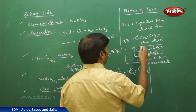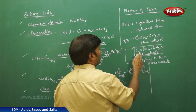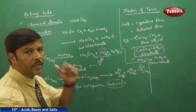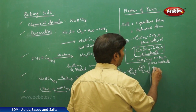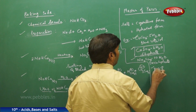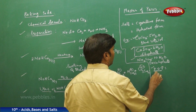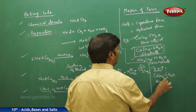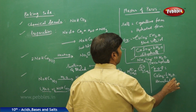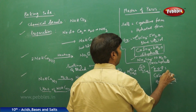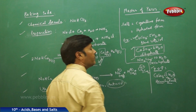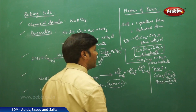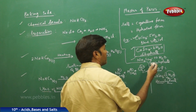We can prepare plaster of Paris from calcium sulphate dihydrate. The chemical composition of plaster of Paris (POP) is CaSO₄·½H₂O, also called hemihydrate, because it has only half a mole of water. So calcium sulphate hemihydrate is plaster of Paris.